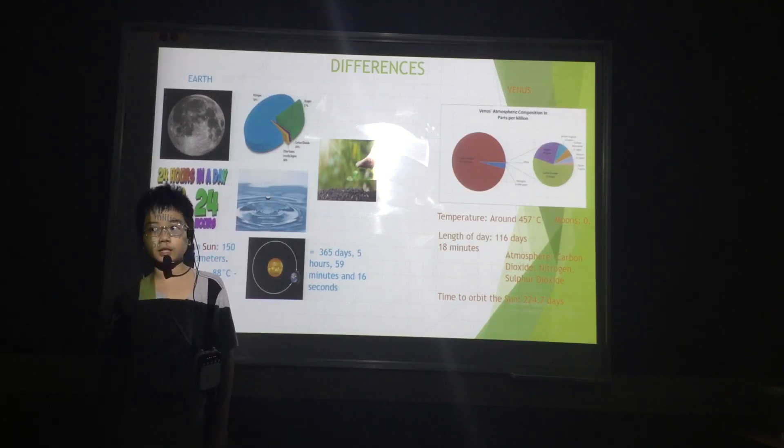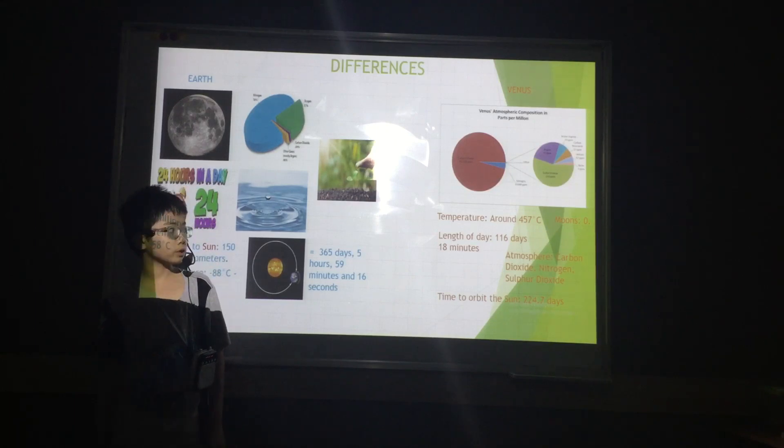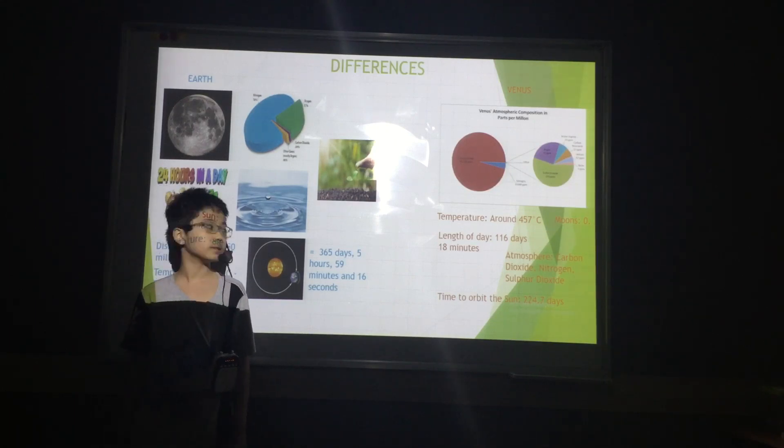The length of day in Earth is 24 hours, but the length of a day in Venus is 116 days and 18 minutes.